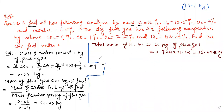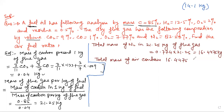Next, we find the total mass of air. The total mass of N2 is 16.4447 kg. Using the ratio of N2 in air (77/100), we set up: 16.4447 kg of N2 corresponds to the total mass of air calculation.